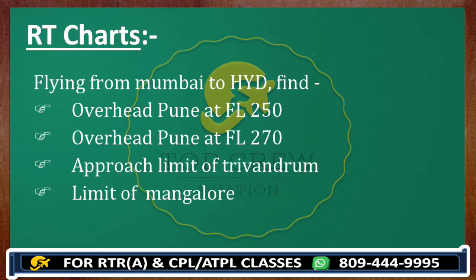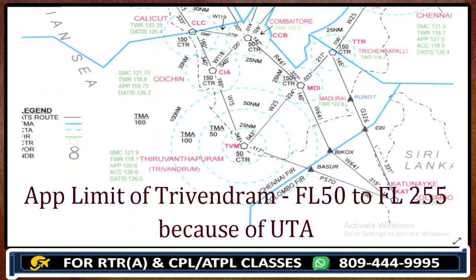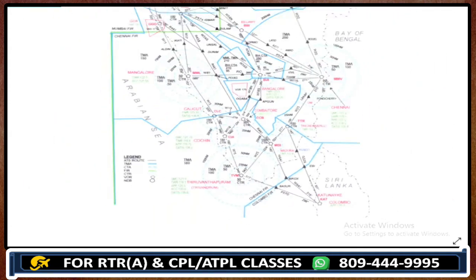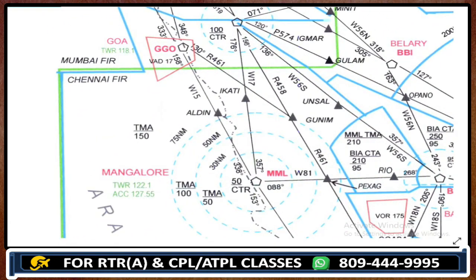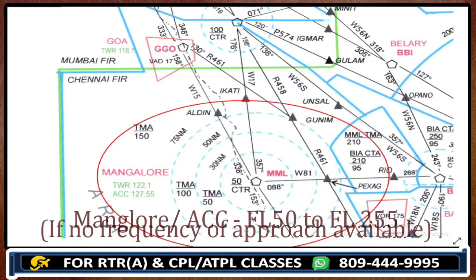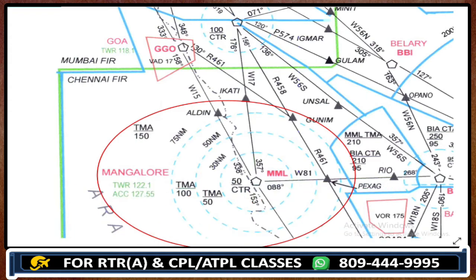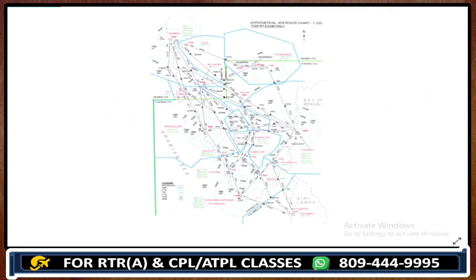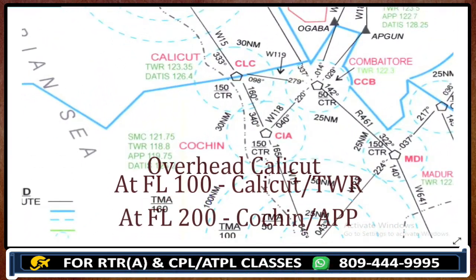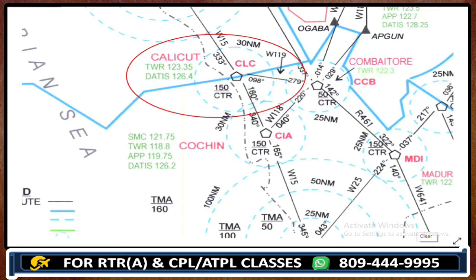The approach limit of Trivandrum is from Flight Level 50 to Flight Level 255, because above FL255 no other ATC is available. Mangalore Control similarly covers Flight Level 50 to Flight Level 255 — if no approach frequency is available, Mangalore Control applies. Overhead Calicut at Flight Level 100, you can use Calicut Tower, but at Flight Level 200 there would be a Calicut approach.